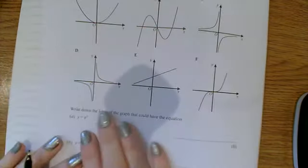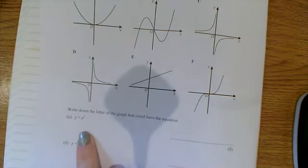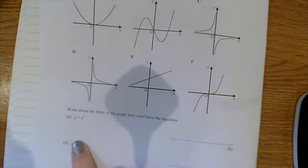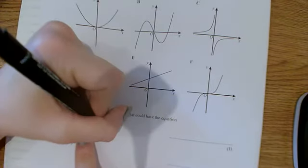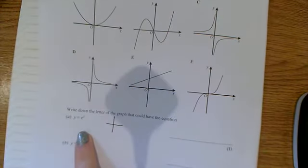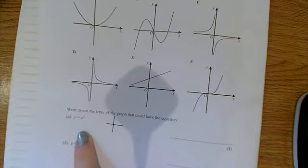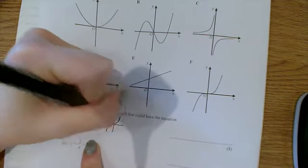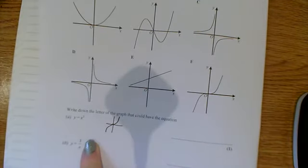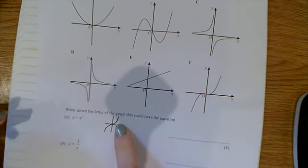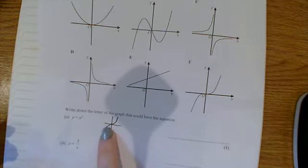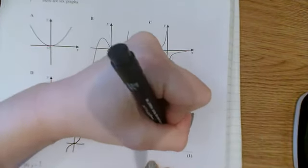So the first one we've got is the equation y equals x cubed. Now you can plot this graph exactly, and sometimes you might be asked to do that, but you need to just recognize the general shape of y equals x cubed. And the general shape of it is this. It goes through the point 0, 0, and then it looks something like this. And it's positive up here because positive numbers cubed are positive, and it's negative down here because negative numbers cubed are negative. So this is F.